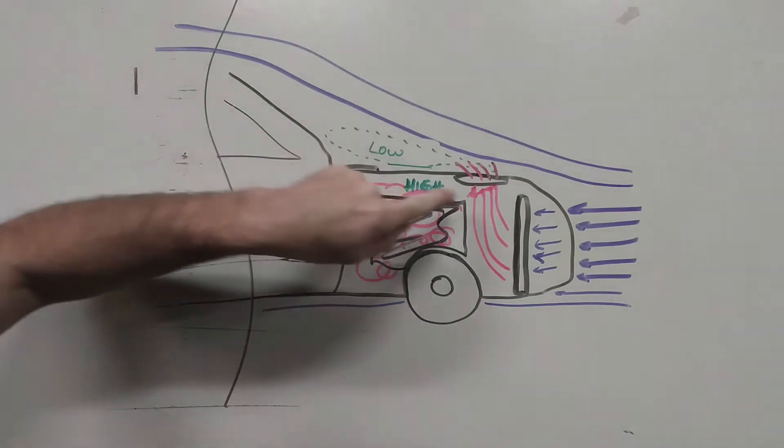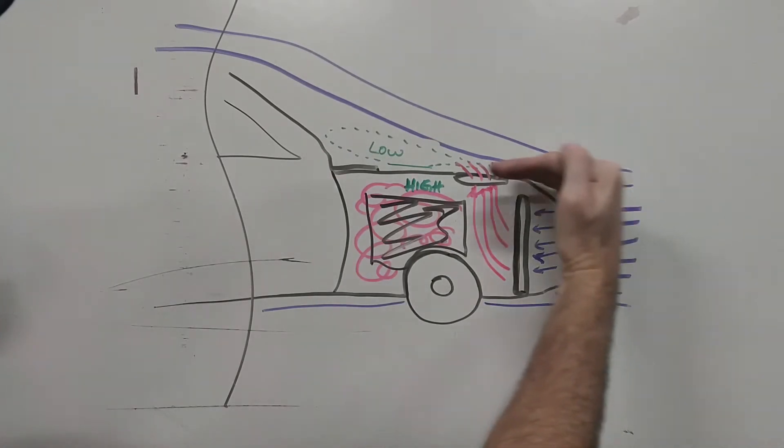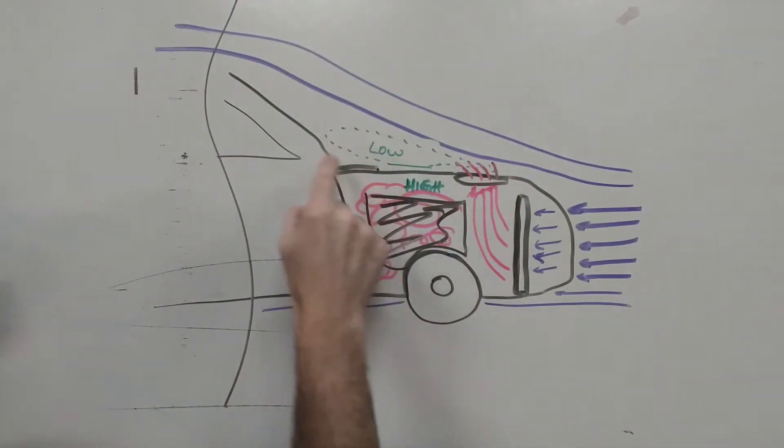Above the hood you'll find that there's a low pressure because there's kind of a dead space as airflow comes in up over the car. Above the hood right there at the base of the windshield is low pressure.